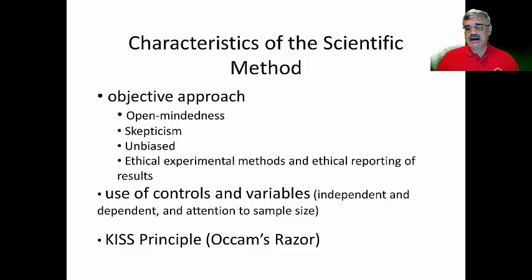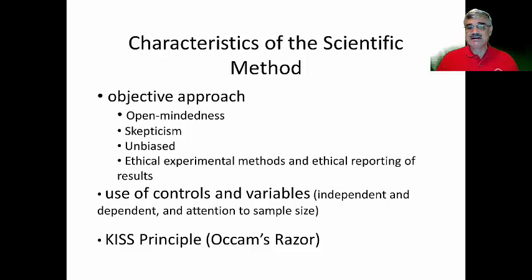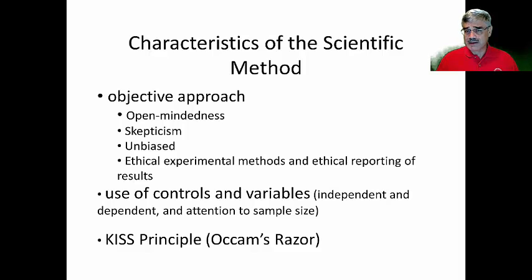Scientists also have to be unbiased in their studies. A scientist should not approach a study already having an outcome predetermined — he or she has to be willing to accept any outcome. Ethics is also very important: when a scientist carries out experiments and reports results, he or she has to be honest and ethical in that reporting. Particularly if the research is funded by the federal government and taxpayers, we all have an interest in that person being honest and ethical. The scientific method is also characterized by its use of controls and variables — independent and dependent variables — and attention to sample size, which gets into concepts of research design.